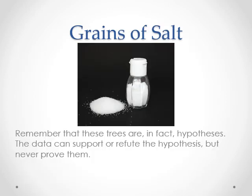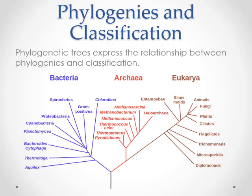Remember that these trees we create are a hypothesis - our best explanation for how these organisms are related to each other. You can have data that supports or refutes it, but you cannot prove these trees, because you can't go back in time and watch it happen. When you make these trees - and you will make these trees on your assessment and in lab - what I care about is your reasoning, not whether you're right or wrong.